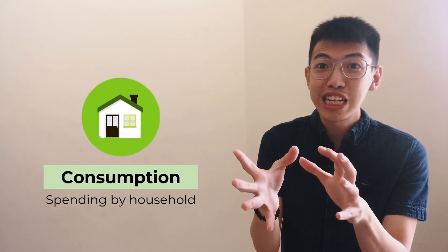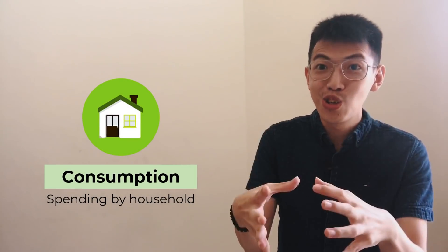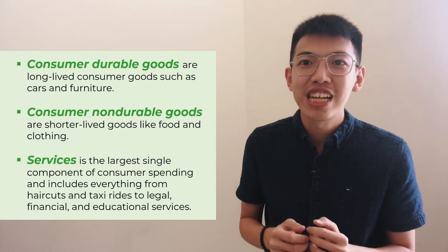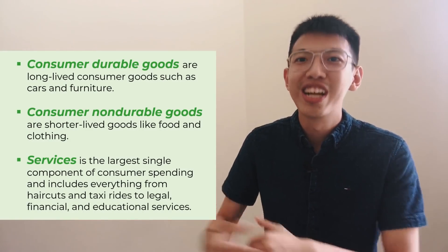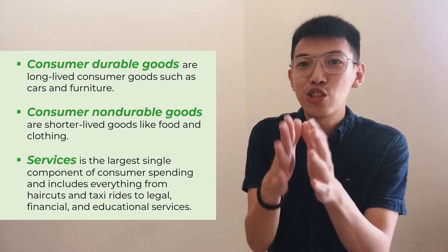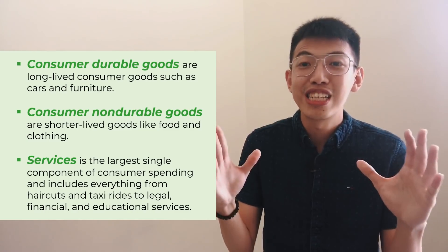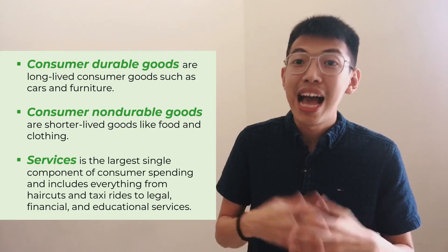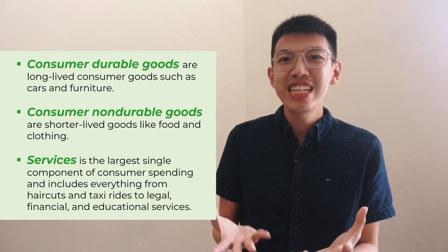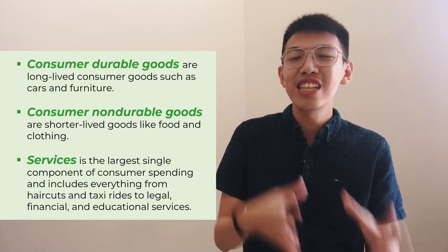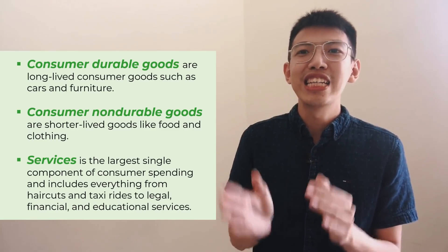First is consumption — spending by households, which is us. If we purchase food, clothes, or drinks, it is counted in the consumption part of GDP. It consists of consumer durable goods such as cars and furniture, consumer non-durable goods which are short-term goods like food and clothes, and services such as haircuts, education, and consulting. All of these are included in the consumption component of GDP.